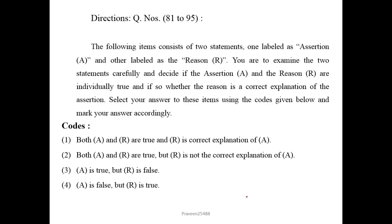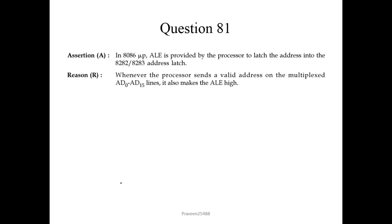So here we will start. There is a direction for questions 81 to 95 — there will be assertion and reason. If assertion and reason both are true and reason is the correct explanation of assertion, we choose option 1. If both are true but reason is not the correct explanation, we choose option 2. If assertion is true but reason is false, option 3. And if assertion is false but reason is true, option 4.